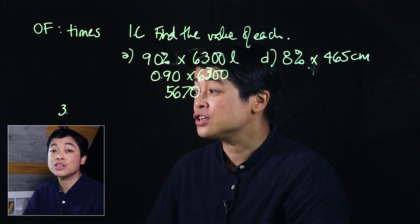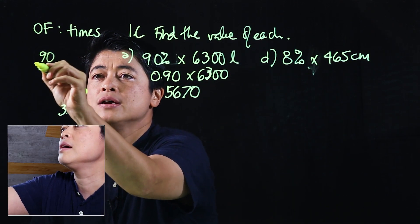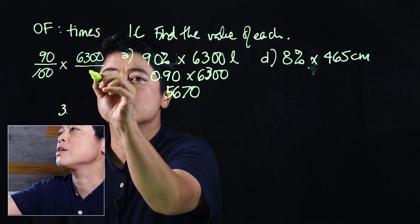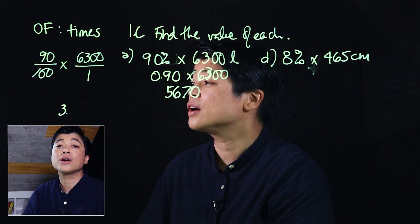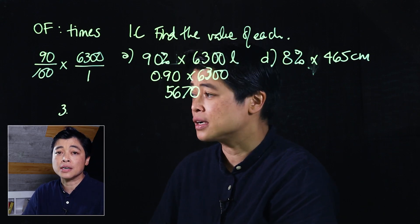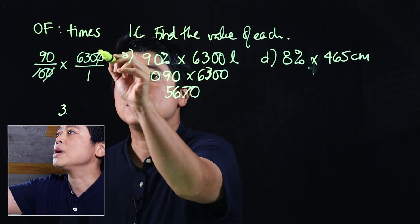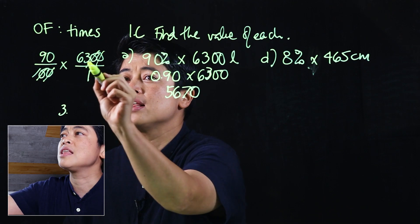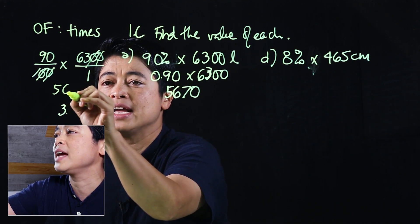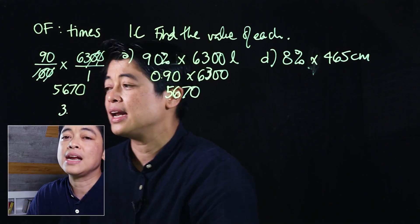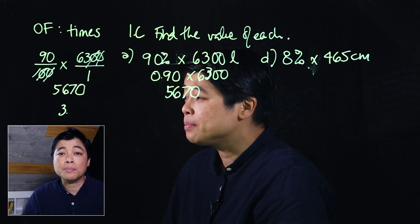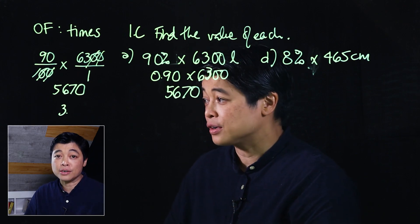Now, if we were to do it computationally or mentally, that means this would have been 90 over 100 times 6,300. We said anything on the numerator will cancel with anything on the denominator, so these zeros will cancel. That leaves me with 63 times 9 and then I'll add a zero after. When I take 63 times 9, that's 567, and since I have one zero, then I add the zero.